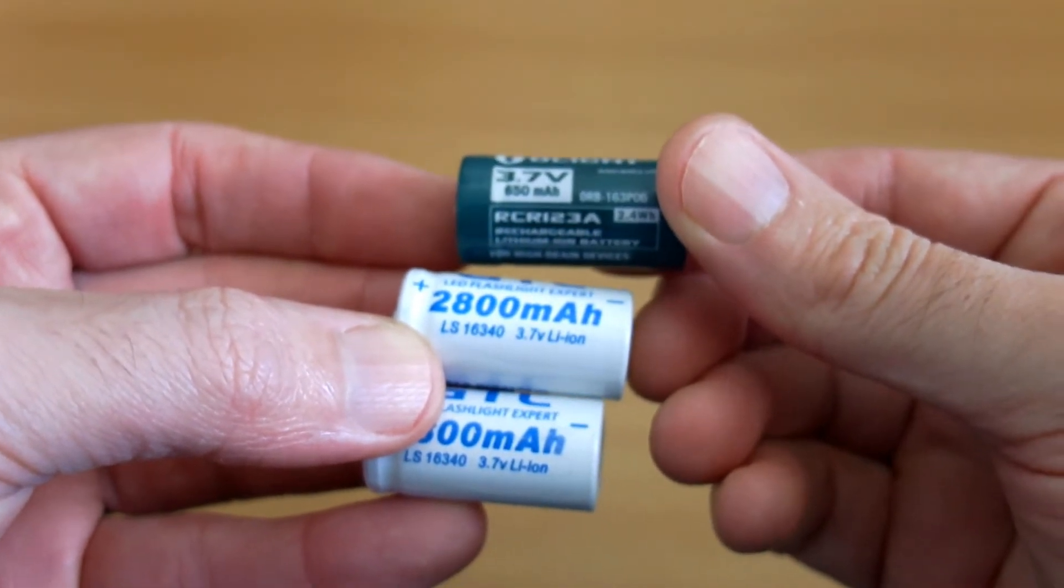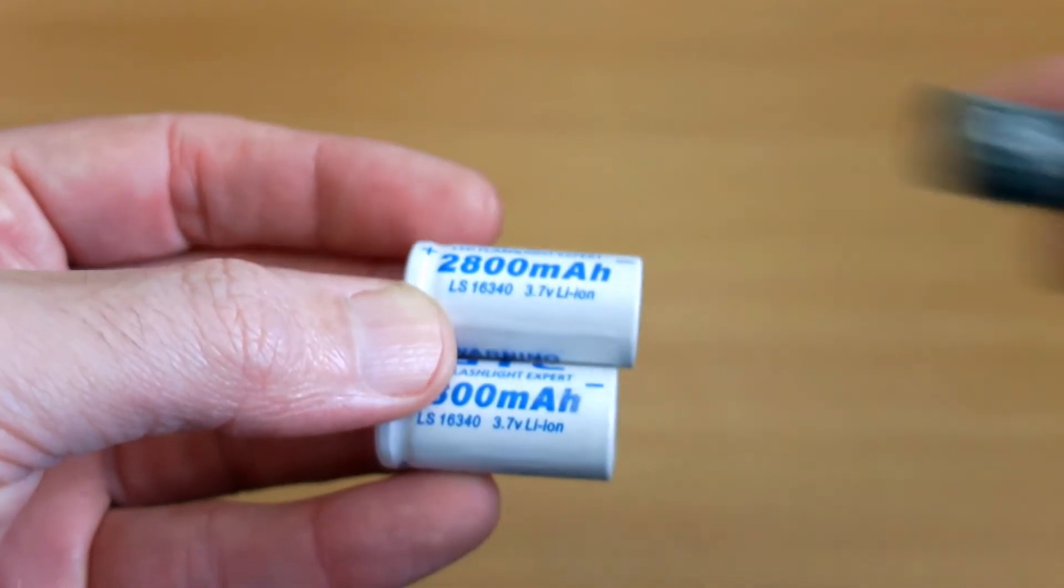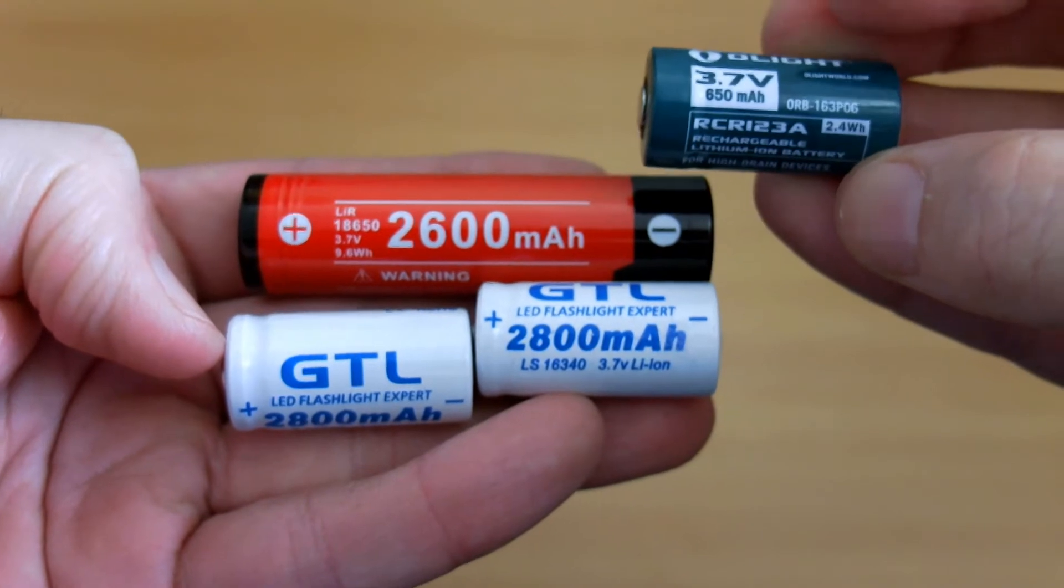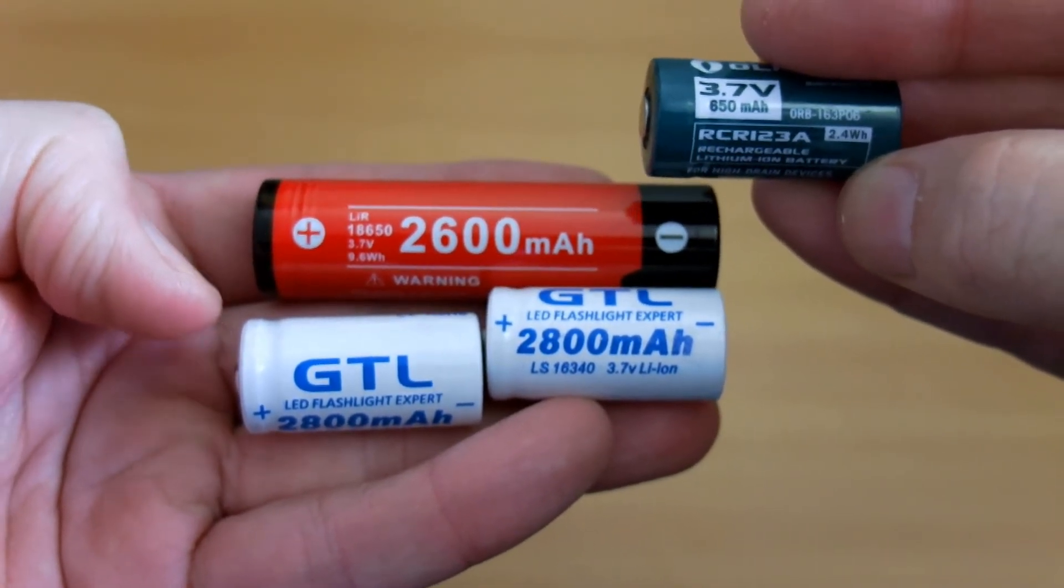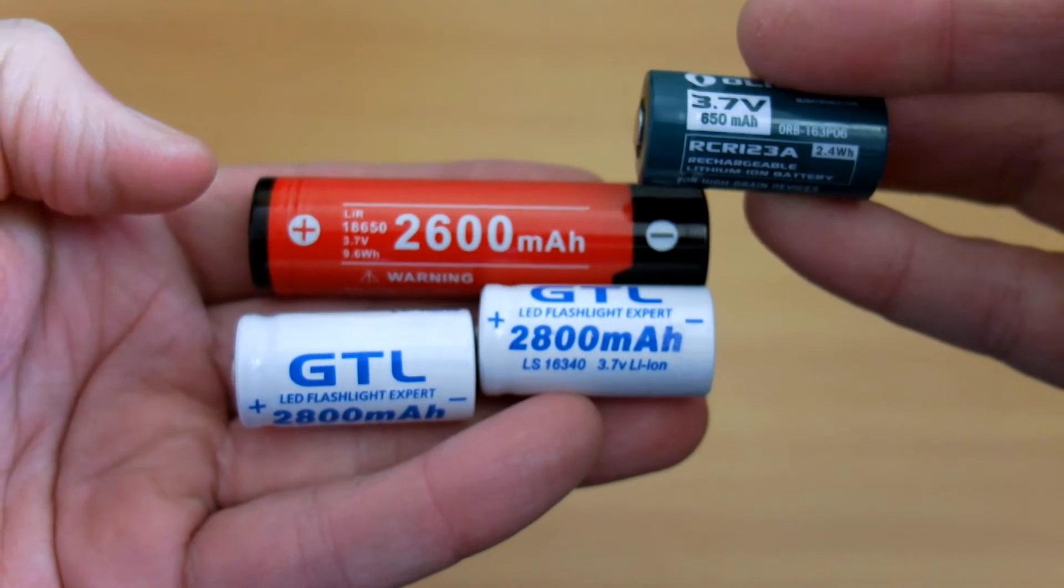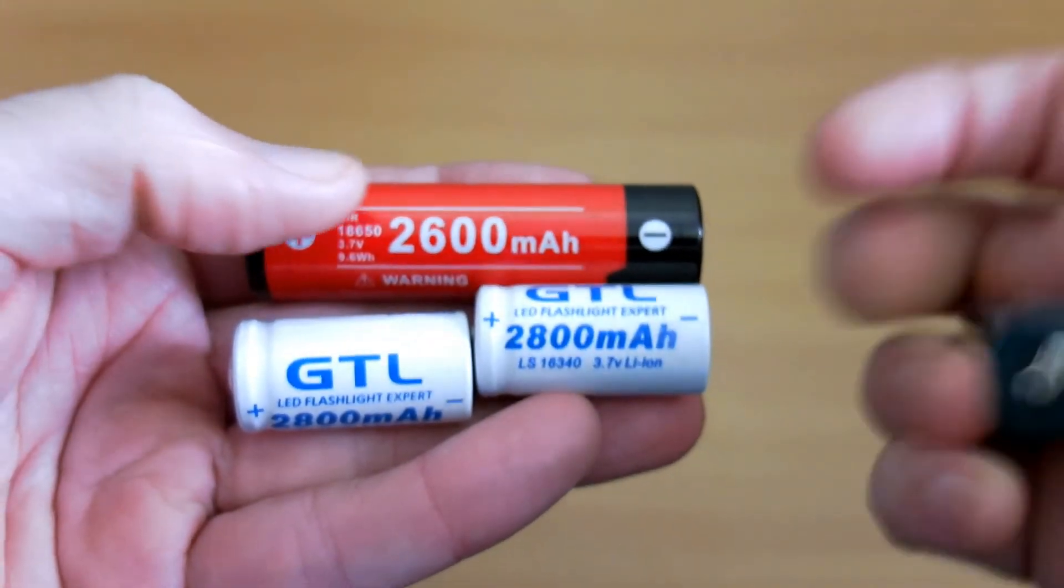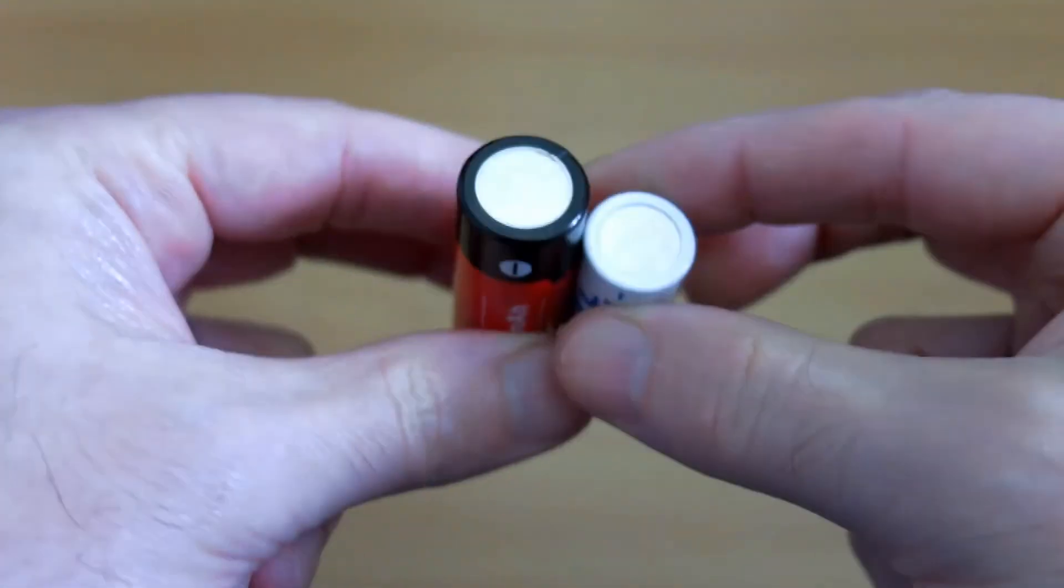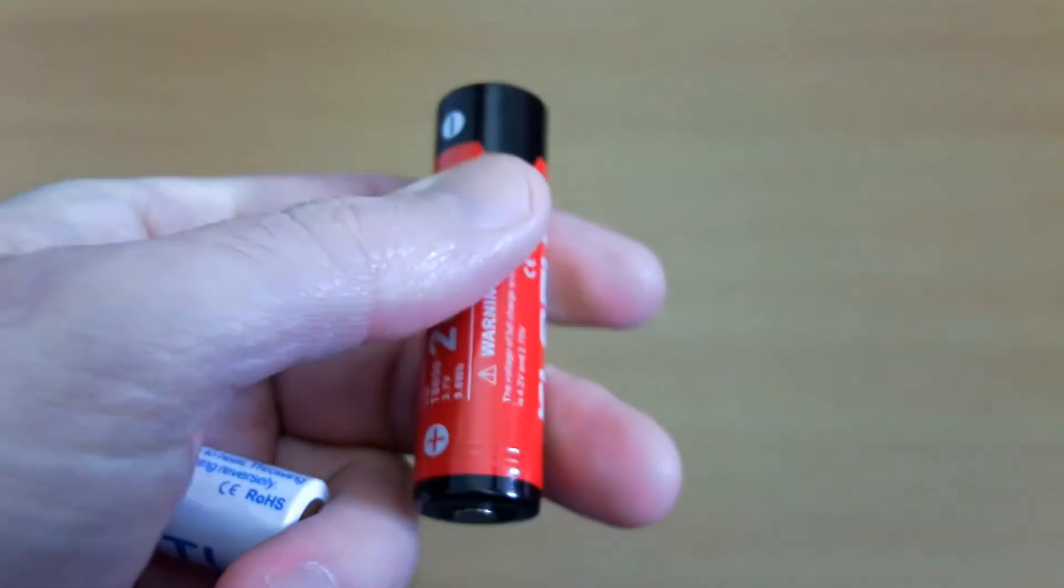They're claiming higher capacity than this 18650, a Clarus branded Panasonic rewrap, which is basically impossible. CR123A cells are actually slightly smaller than half the size of an 18650.